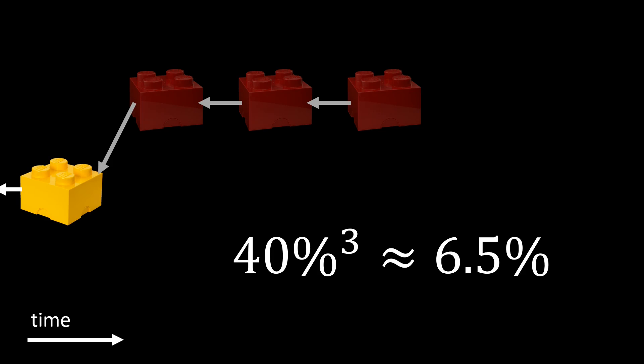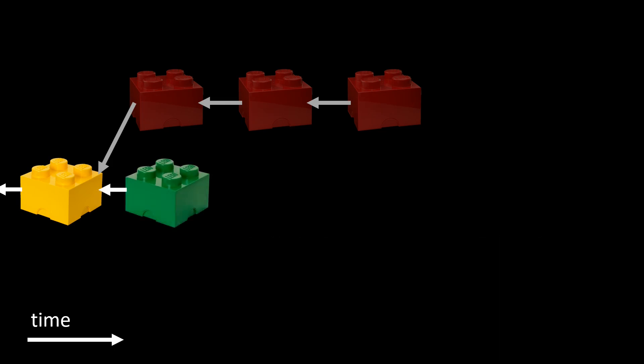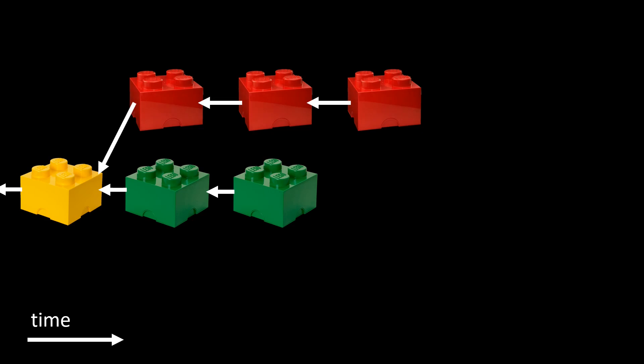So the chance for this to happen is not big, but it's certainly possible. Once our attacking miner is three blocks ahead, the attacker is pretty safe. Maybe the attacker can increase their advantage even more, but even if the honest miners find and publish a block, the attacker secretly still has a longer chain. If the honest miners catch up to the attacker and are only one block behind, the attacker should get nervous. At this point the strategy of the attacker is to publish all their blocks right away, to make sure that the attacker chain is still the longest. Like before, this will immediately render the work of the honest miners useless, as none of their blocks are in the longest chain.